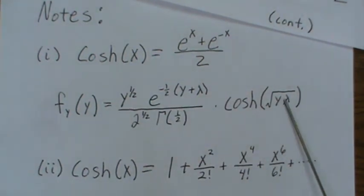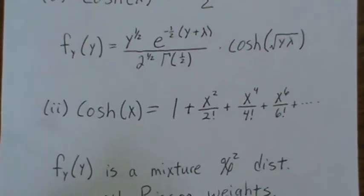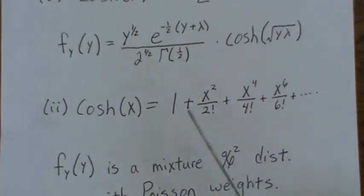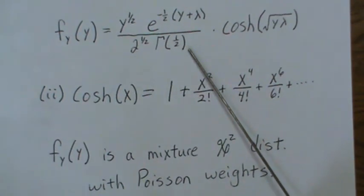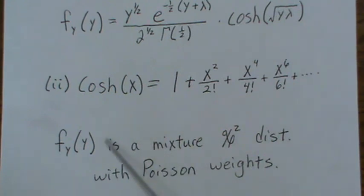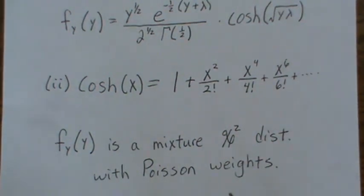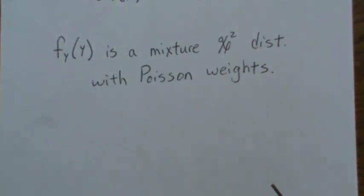And then another note that people do is they take that cosine and rewrite it as a Taylor expansion, plugging in this for X in each of those. So I'm not going to do that, but when you do that, then you can show that that density is a mixture of chi-square distributions, which is what's over here, with Poisson weights. And again, I'm not going to do it, but the literature quotes this probably the most. And this is the approach that they use to get to it. I hope you enjoyed the video.